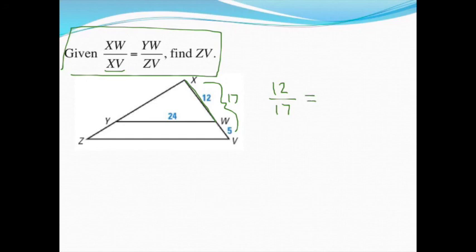I'm going to put that equal to side YW, which is this side down here. Again, I know what that piece is. That's 24 over side ZV, which is this side down here. I don't know it. So I'm going to call that x, even though there's already an x in the diagram. I'm going to call that x for my missing side.